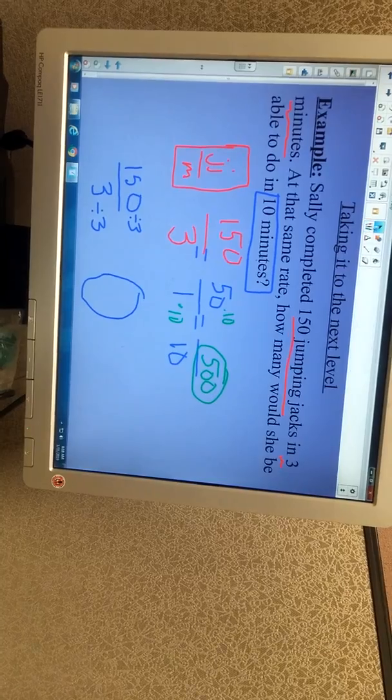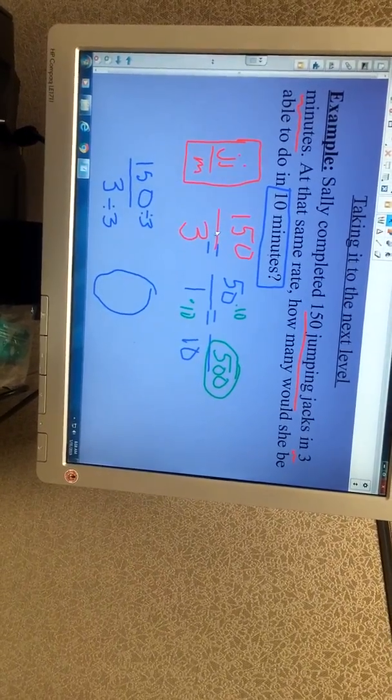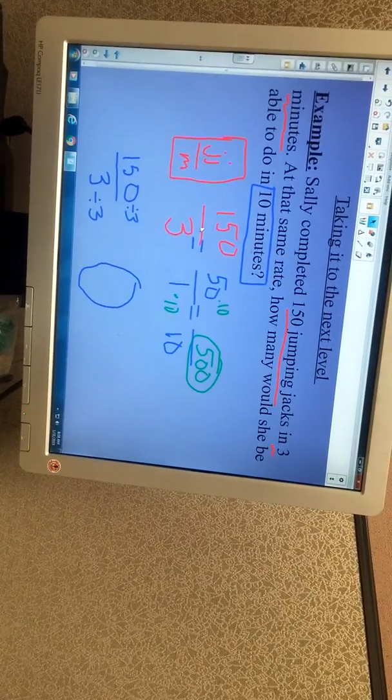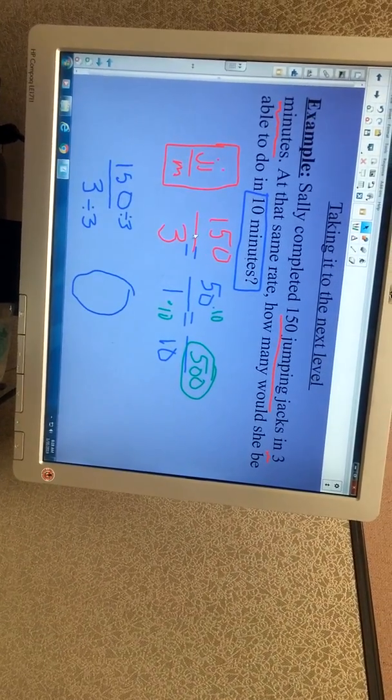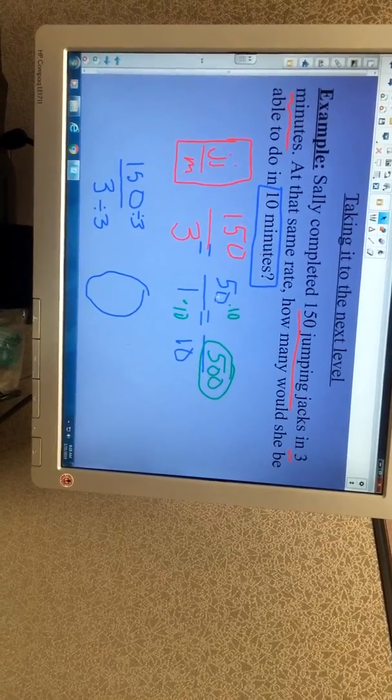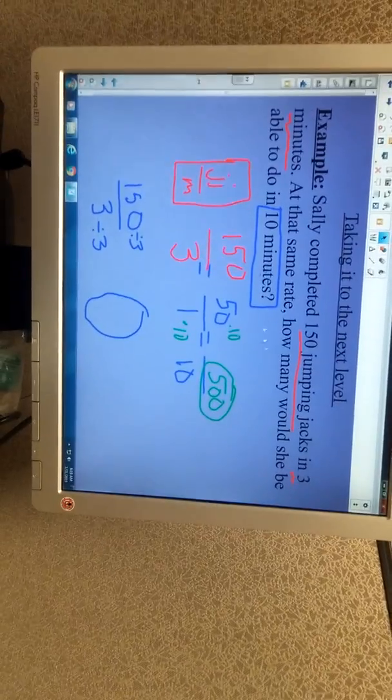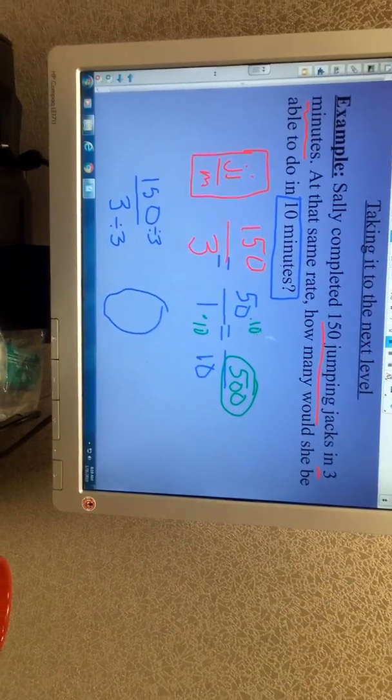Another way we can double check this is if we take our original ratio and put this in your calculator, 150 ABC 3, it spits out 50. It simplifies to 50. And we look right here, it's still 50. If we take our answer, 500 ABC 10, it also simplifies to 50. All three of these are equivalent.